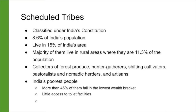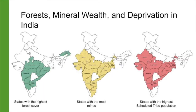Only 19.7 percent of Scheduled Tribes live where the source of water is located within the premises, whereas that number is 46.6 percent for the overall population. Thus, the areas of India that have the greatest forest cover and the most mineral wealth are also its poorest.